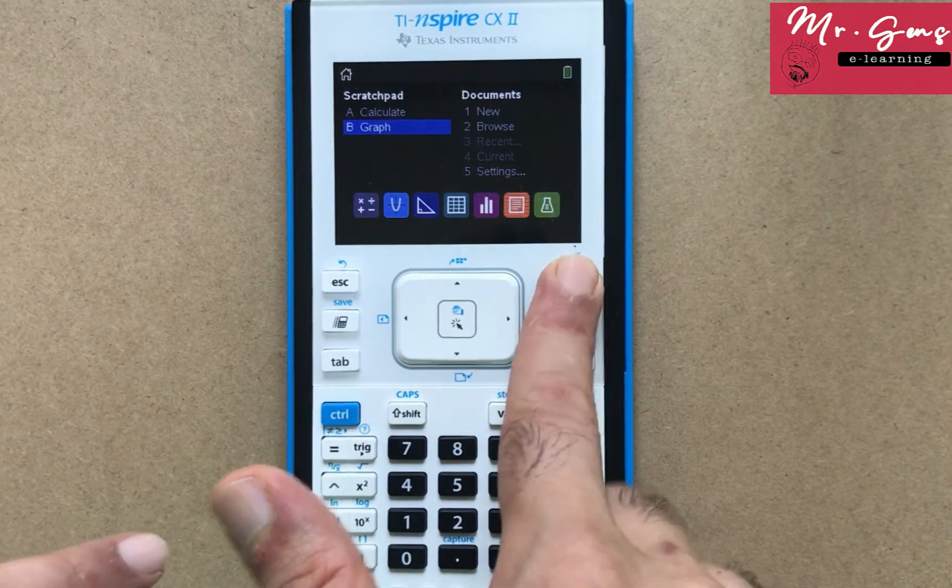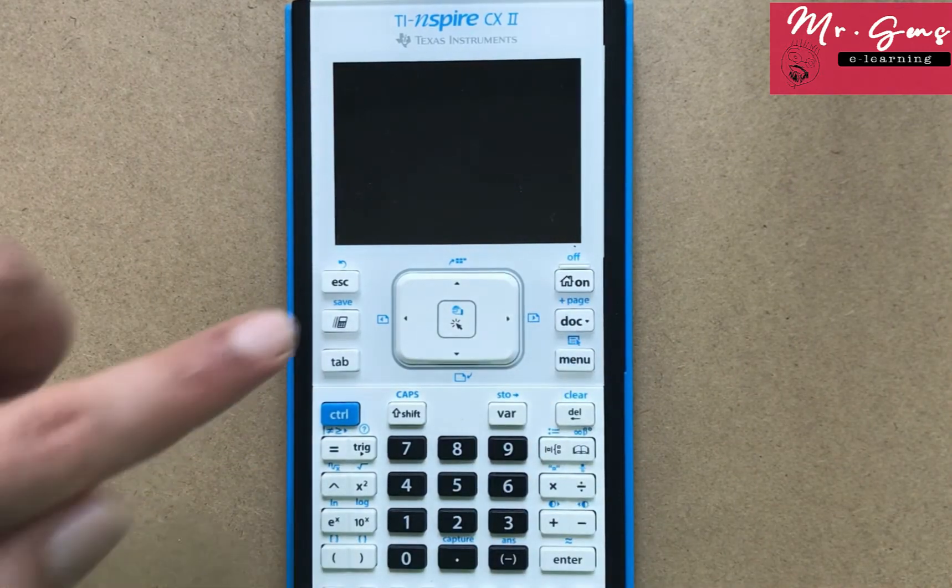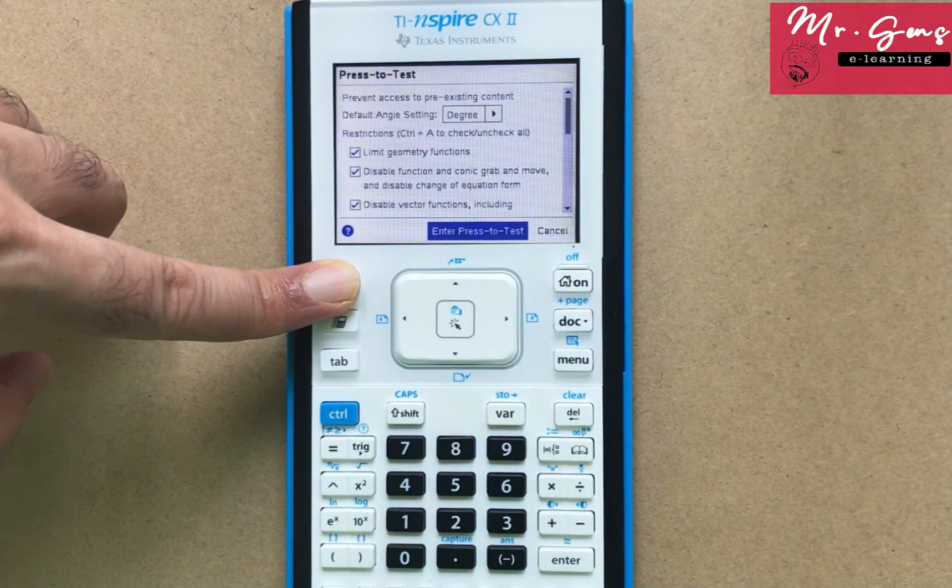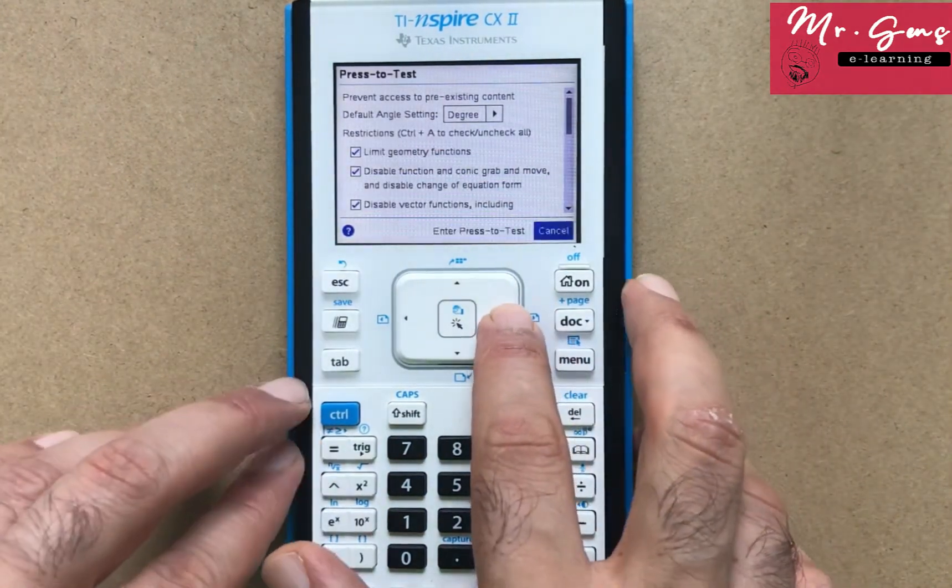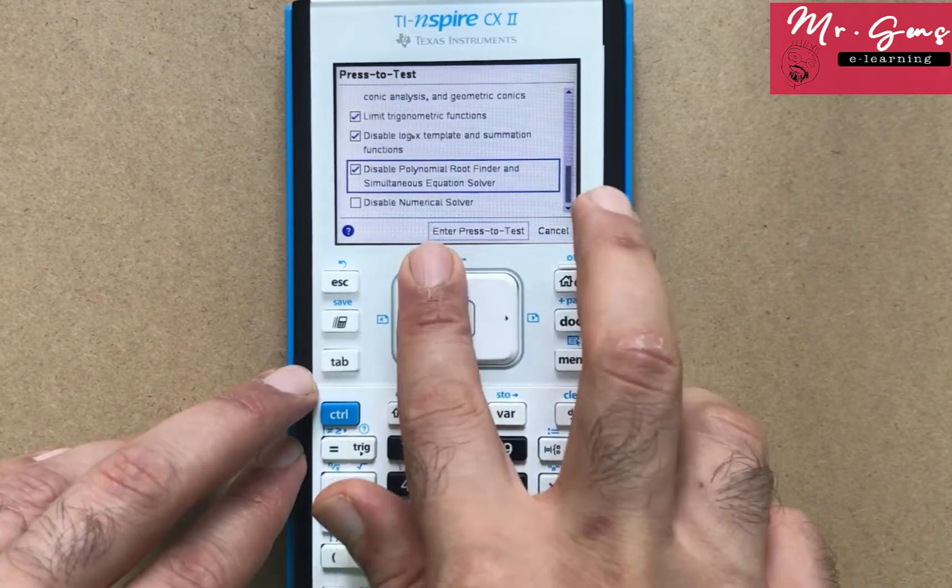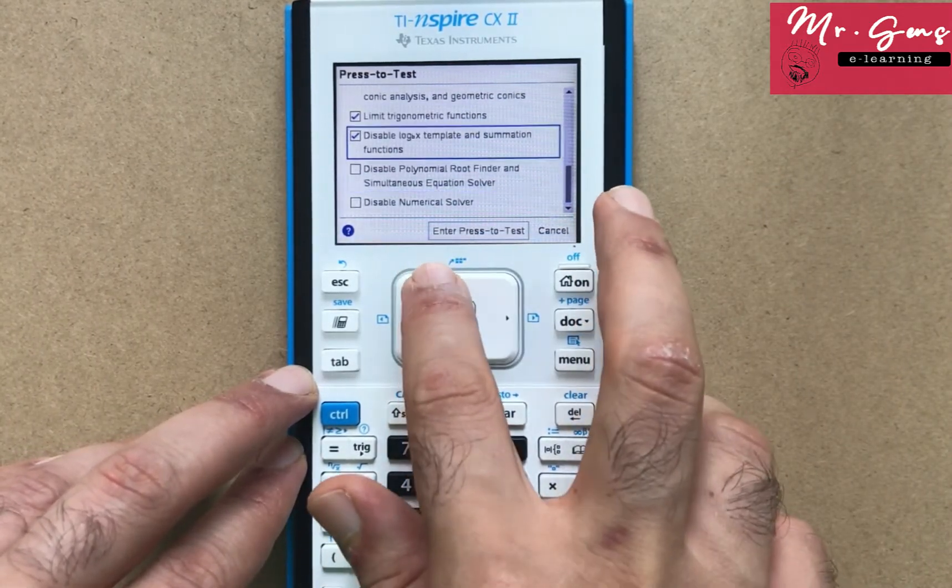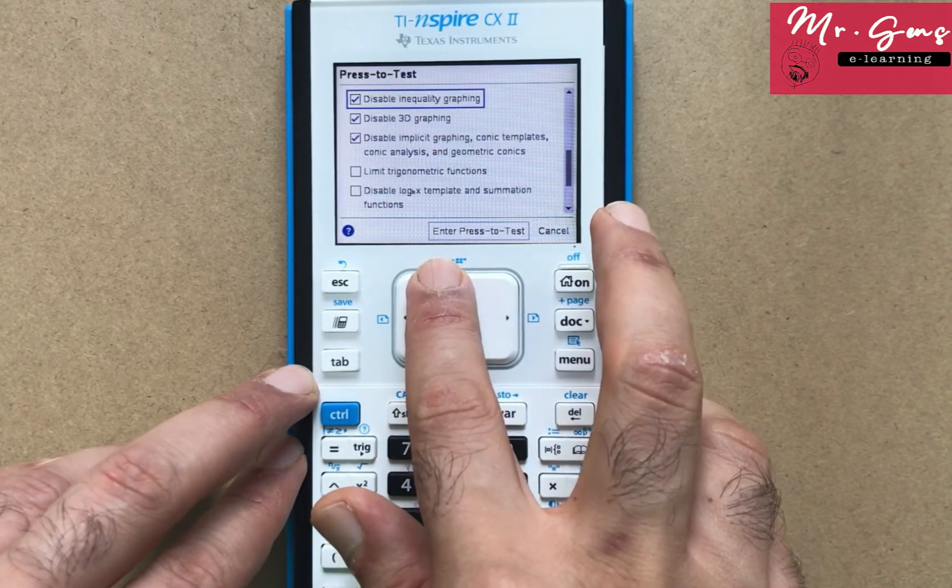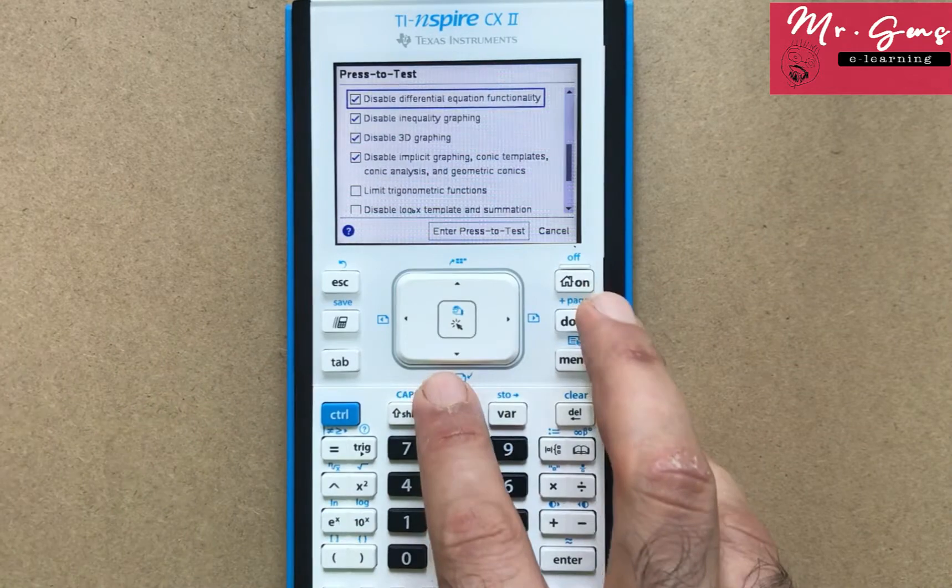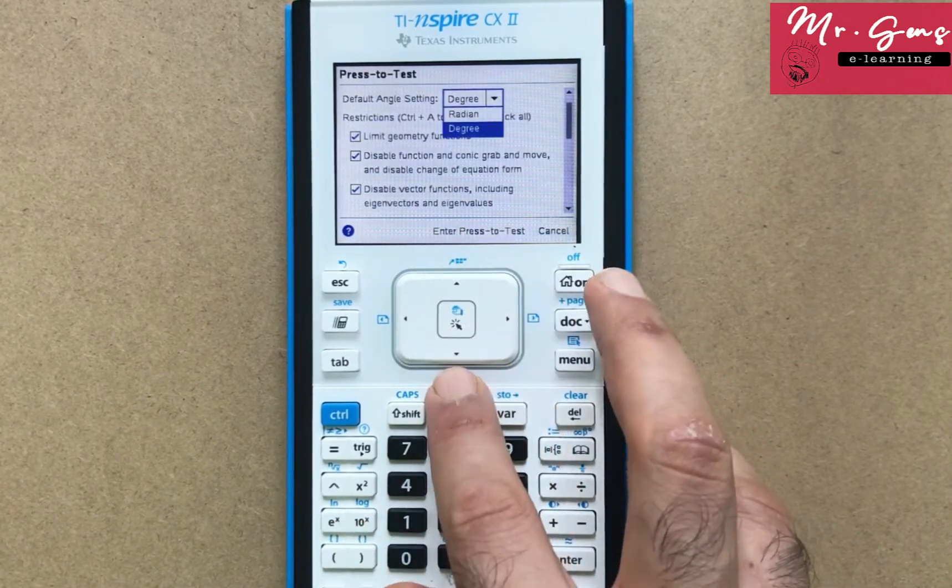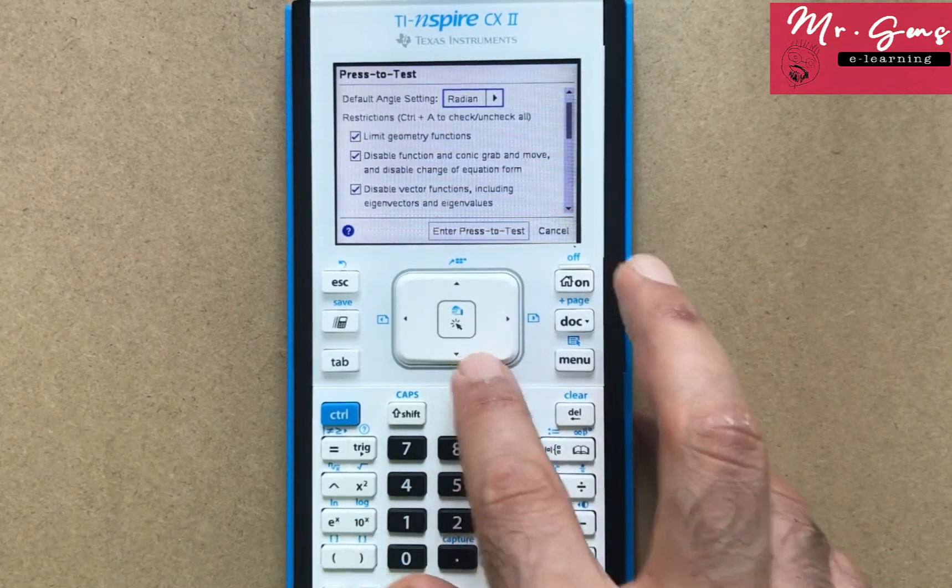Your calculator must be turned off. Then press and hold the escape key and turn it on. Now you can select or deselect the options. Uncheck the ones you want to keep. My settings for IBDP exams. Then press enter.